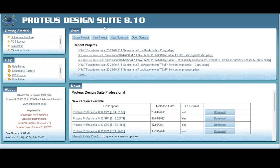The next step is the project wizard. Keep the default schematic diagram as it is — no need to change it. For PCB layout, select 'do not create a PCB layout' because we are just going to simulate the project. Then go to 'create a firmware project'. Here you can see different types of microcontrollers starting from 8051, Arduino, and Raspberry Pi. We will select Arduino here.